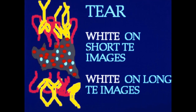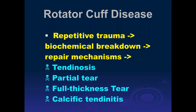Then you can get frank tears where you have separation of the collagen fibers and fluid collection — either in the form of cysts or a complete rupture of the tendon. That's the way degenerative disease progresses within the tendon due to repetitive trauma. You get a biochemical breakdown of the molecular structure, you get repair mechanisms, and you can either get tendinosis or go on to partial tears and full thickness tears.